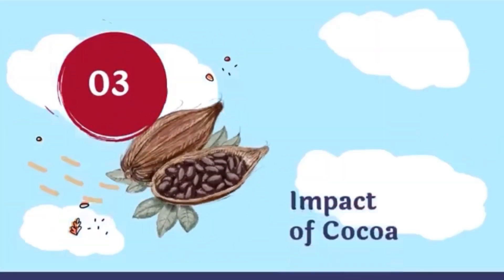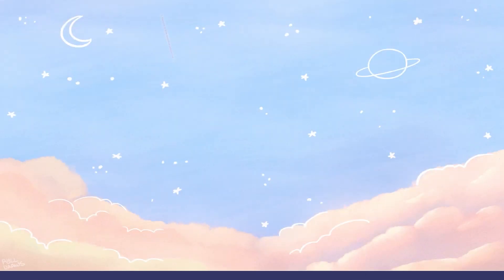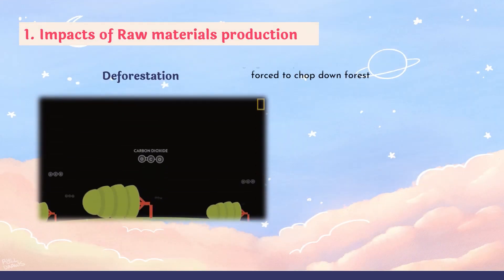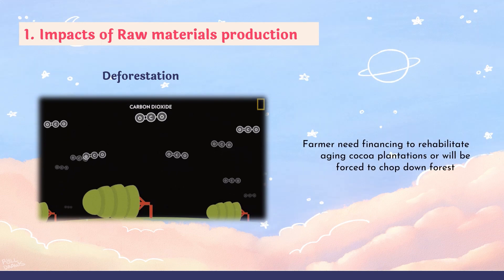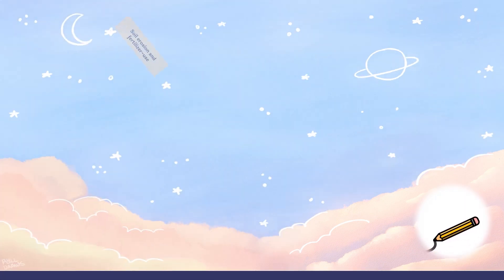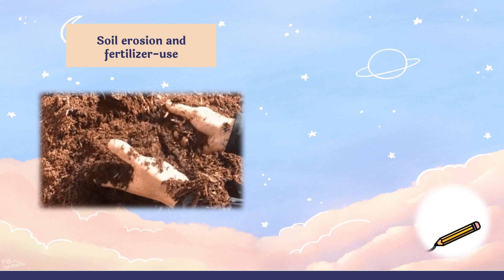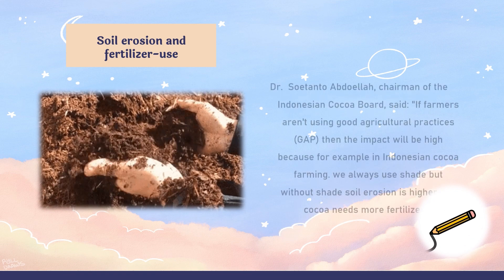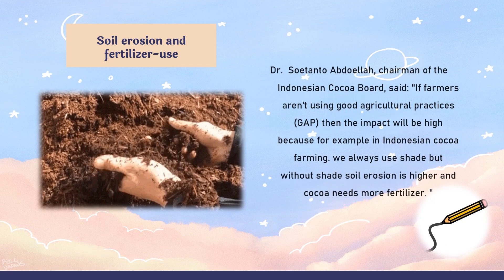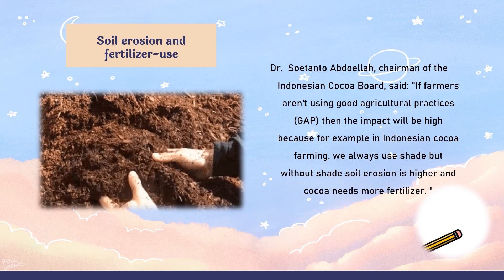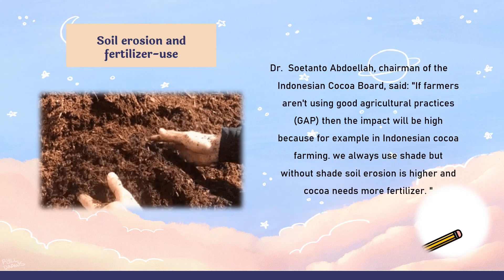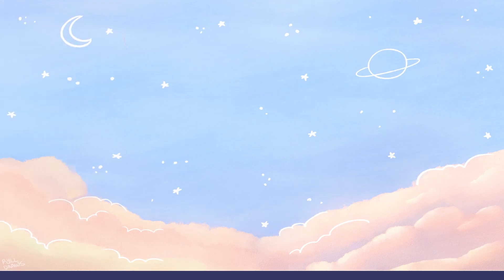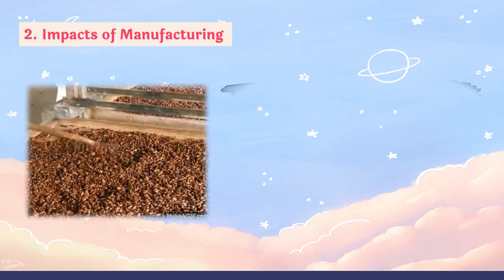Next, we will look into the impact of cocoa. For raw materials production, the first impact is deforestation — farmers need financing to rehabilitate aging cocoa plantations, or they will be forced to chop down forests. The second impact is soil erosion and fertilizer use. Without shade, soil erosion is higher and cocoa needs more fertilizer, highlighting the importance of good agricultural practices.